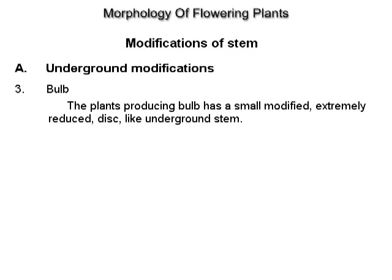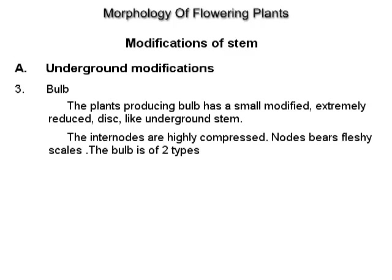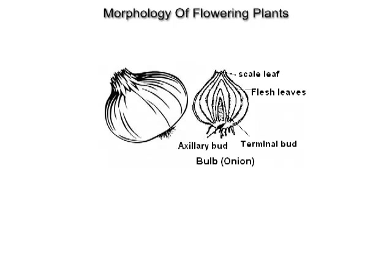Bulb. The plant producing a bulb has a small, modified, extremely reduced, disc-like underground stem. The internodes are highly compressed. The nodes bear fleshy scales. The bulb is of two types: tunicated bulb, e.g. onion, and scaly or naked bulb, e.g. garlic.